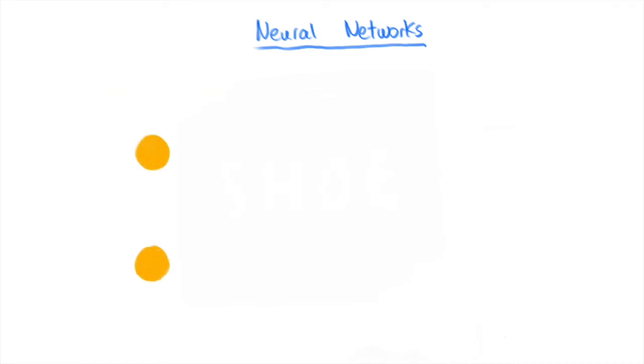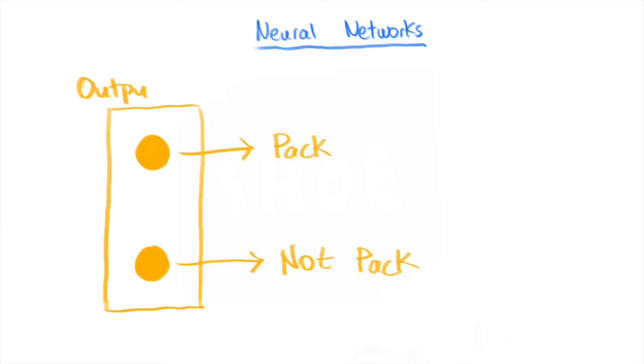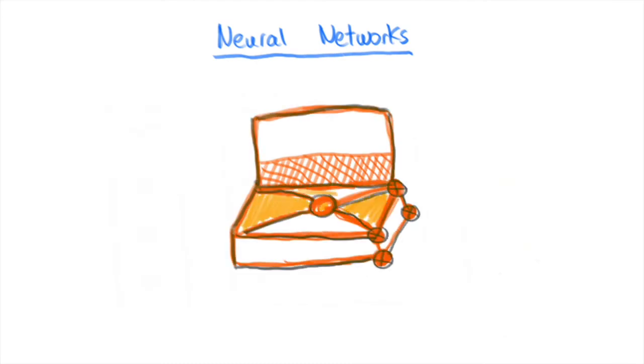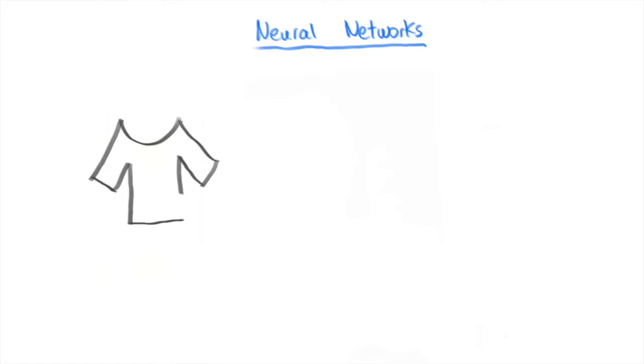And then finally I have the output layer which just represents the outputs I want from my neural network model, which in this case just tells me if I should pack or not pack a particular combination of clothes into my suitcase to take with me to the airport. Now let's connect these layers together.